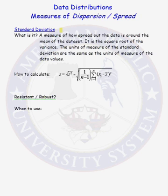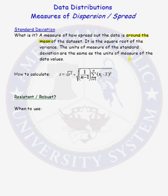The sample standard deviation is also a measure of how spread out the data is around the mean of the data set, just like the variance. The standard deviation is the square root of the variance. Taking the square root makes the units of measure of the standard deviation the same as the units of measure of the data values. So if all the data values are measured in feet, your sample standard deviation will be in feet — whereas your sample variance would be in feet squared, which is harder to interpret.